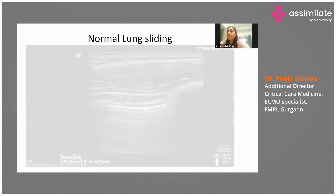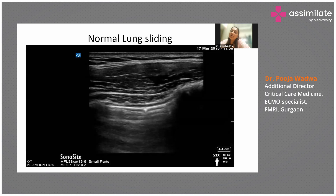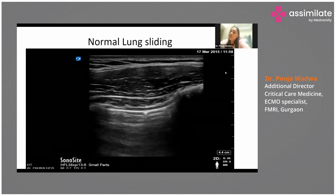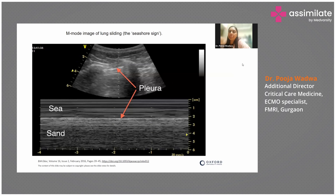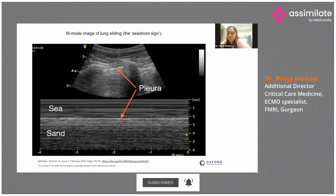The lung sliding looks like someone sliding on skates. That sliding sign means your pleura is functioning normally. If it is absent, it means there is a pneumothorax. In M-mode, if you place the ultrasound probe on the chest, you get a seashore sign in a normal lung — above the pleura is the 'sea' pattern, and below is the 'sand' pattern. This confirms there is no pneumothorax.